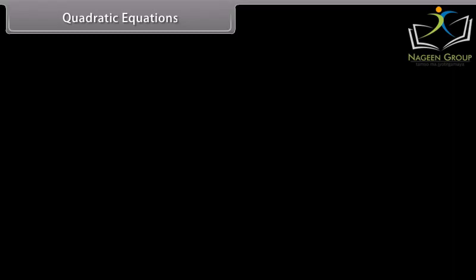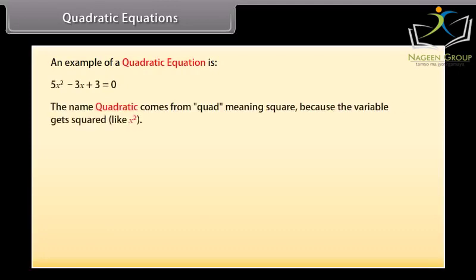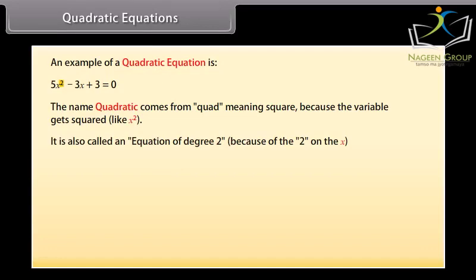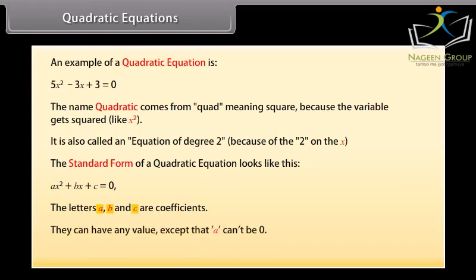Quadratic equations. An example of a quadratic equation is shown. The name quadratic comes from 'quad' meaning square, because the variable gets squared, like x squared. It is also called an equation of degree 2 because of the 2 on the x. The standard form of a quadratic equation is: ax² + bx + c = 0. The letters a, b, and c are coefficients — they can have any value except that a cannot be zero. The letter x is the variable or unknown.